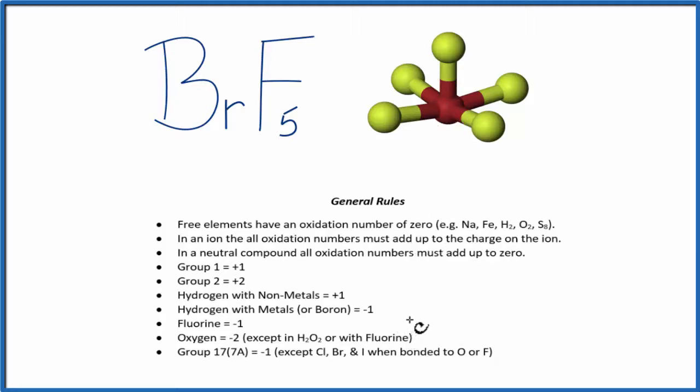So these general rules, they'll help us find the oxidation numbers. So we look down the rules, we're not seeing bromine there, but there's fluorine. It has a minus one oxidation number.